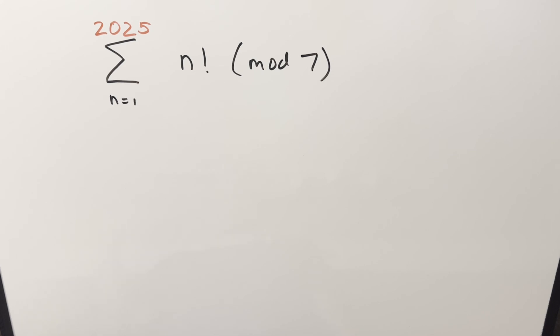Okay, it's kind of a fun problem today. We have here the sum from n equals 1 to 2025 of n factorial mod 7.